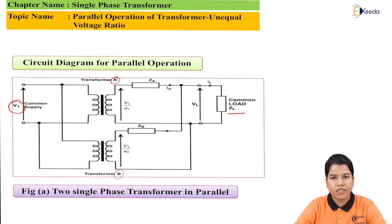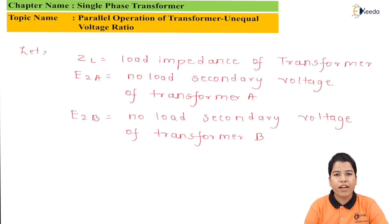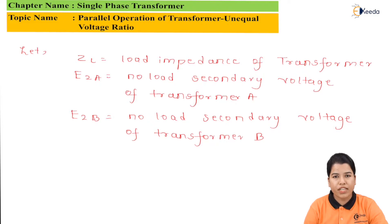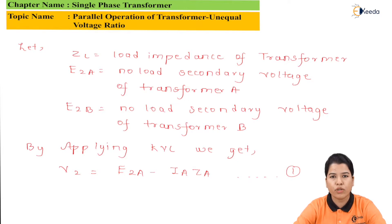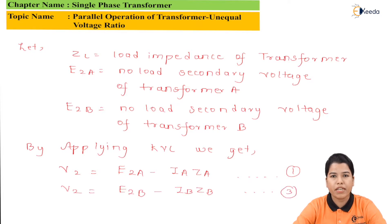Now let us assume certain parameters. Let ZL be the value of load impedance, E2A be the value of no-load secondary voltage of transformer A, and E2B be the value of no-load secondary voltage of transformer B. Now if we apply KVL, we get the formula for V2: V2 is equal to E2A minus IA times ZA. This is equation number 1. Similarly, for transformer B, V2 is equal to E2B minus IB times ZB.